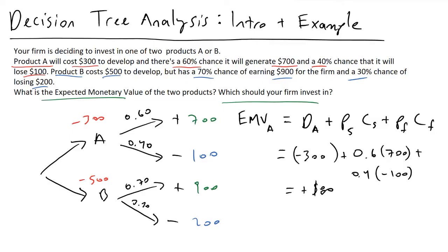Now if we go with product B, which I will denote as EMV_B, the expected monetary value of B, this will be equivalent to that minus 500 bucks that we spent developing it, plus the 70% chance that it got us 900 bucks, and then plus the 30% chance that it got us that loss of 200 bucks. And this number is equal to plus 70, or $70.